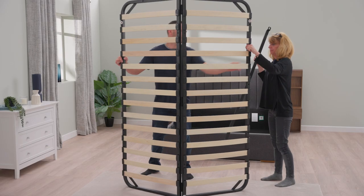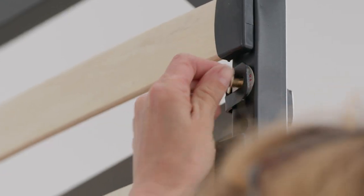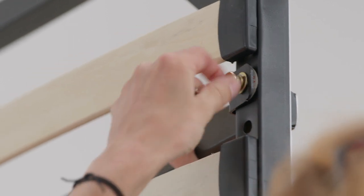Hold the slat frame upright and feed the crossbar through the slats. The position of the crossbar is labelled H and J.